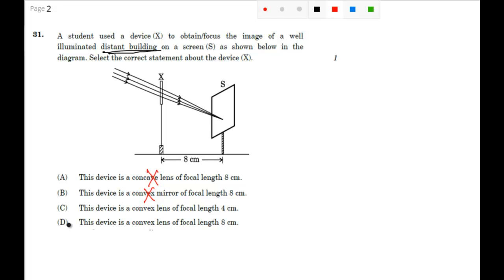Now, if you see C and D, this is a convex lens and you know that in case of convex lens, if the rays are coming from infinity, it will converge at the focus, right?